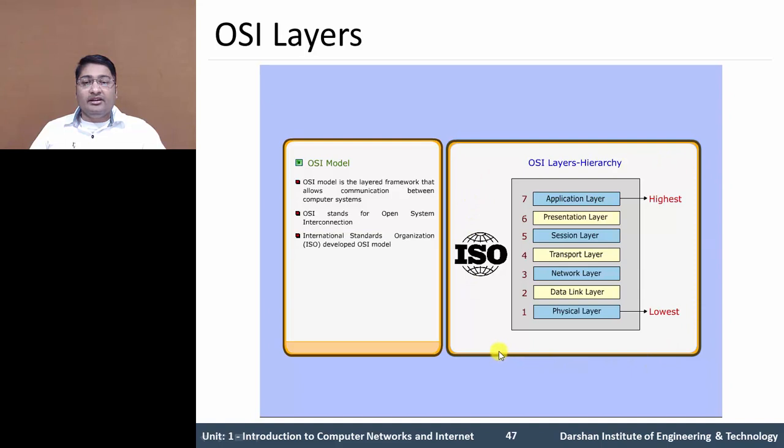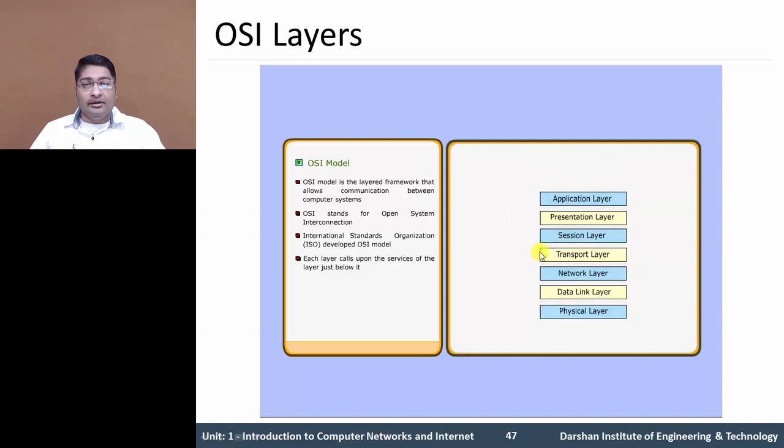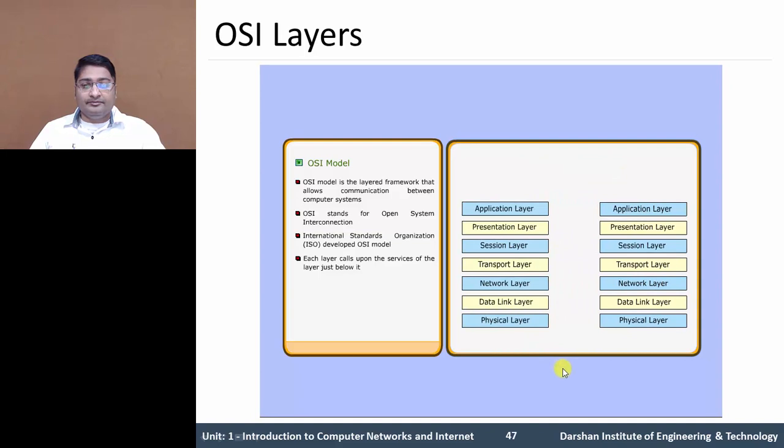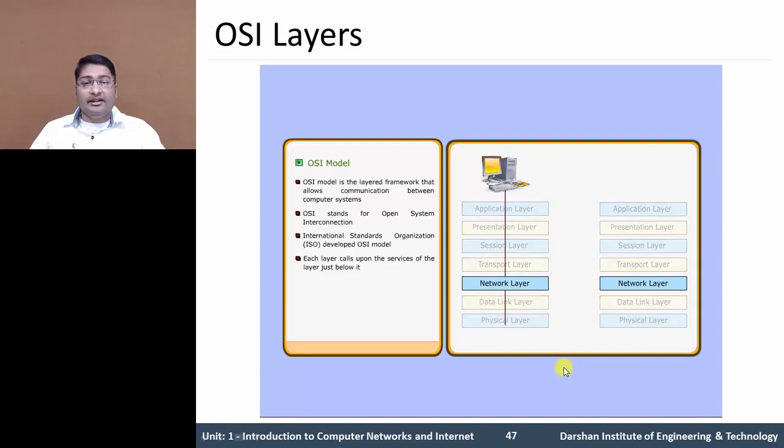Using this layer, the network communicates with each other. Each layer calls upon the services of the layer just below it. For example, network layer provides services to the data link layer and gives services to the upper layer transport layer. If sender wants to send data to the receiver, it passes through all layers on both sides. In a network layer, the communication between machines is a peer-to-peer process using particular protocols.